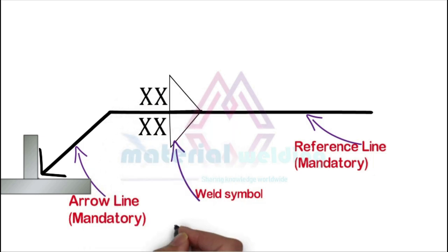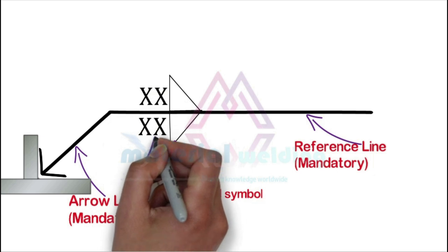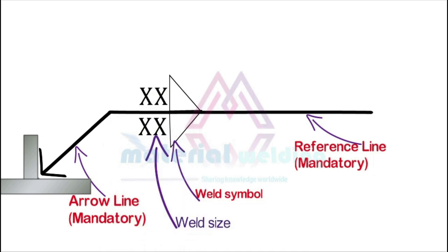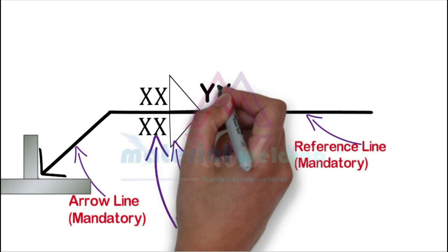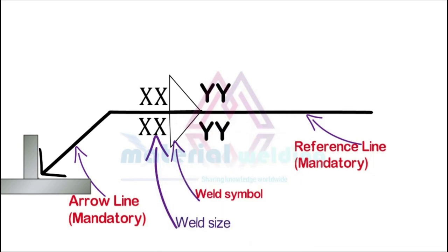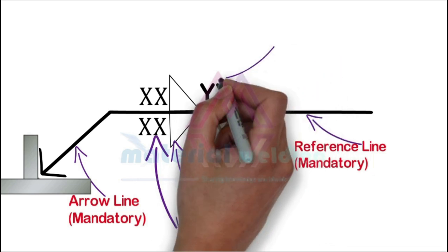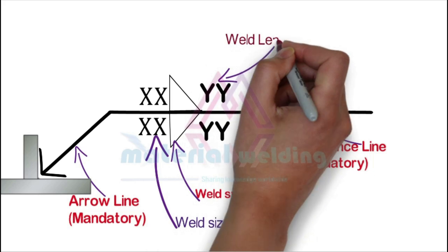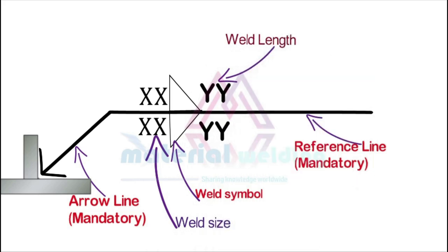In US or related construction, sizes are normally given in inches, while in ISO construction, sizes are specified in millimeters. Weld length, if applicable, is given on the right side of the welding symbol. In case there is no length given on the welding symbol, it means welding has to be made on the full length.